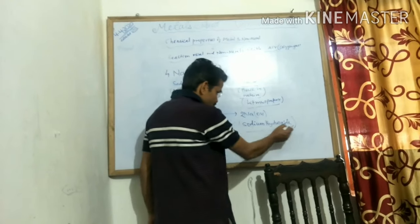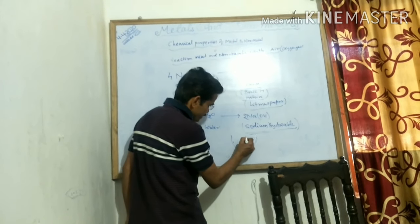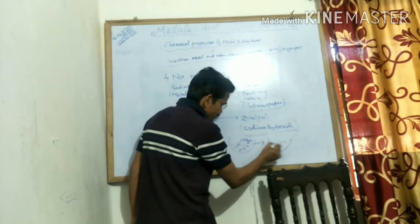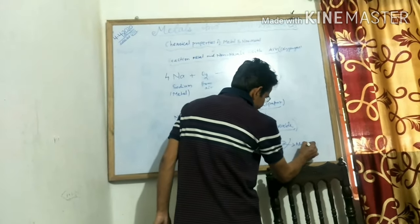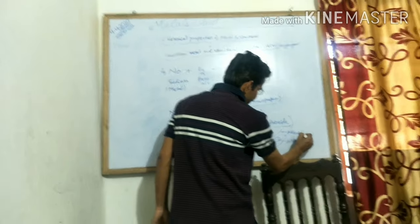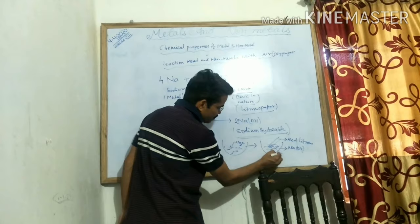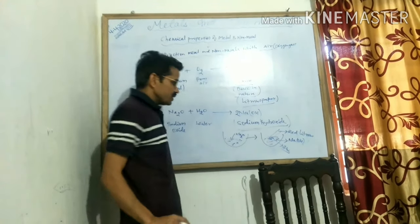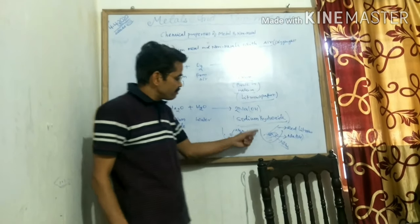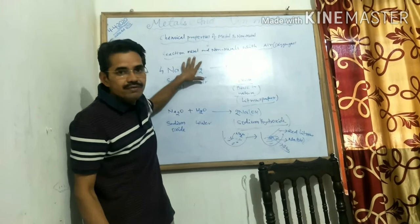When we put sodium oxide into water, a solution of NaOH is formed. On dipping red litmus paper into this solution, the red litmus is converted into blue, which indicates that it is basic in nature. This is one of the chemical properties of metals.